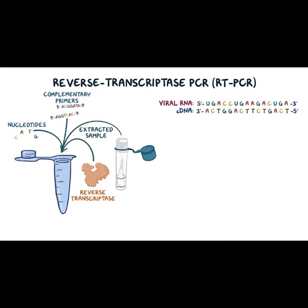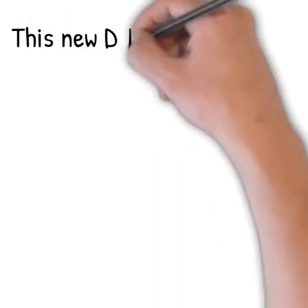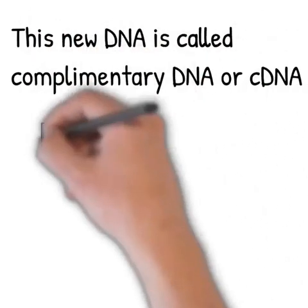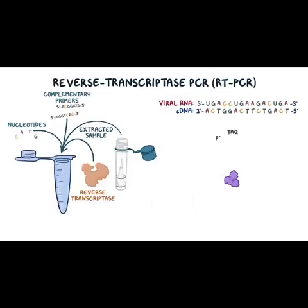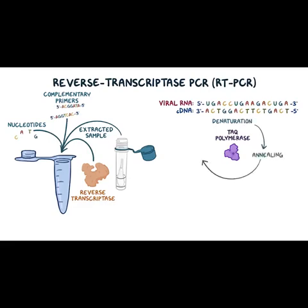In the first step, the RNA is reverse transcribed into DNA. We call it the complementary DNA, or cDNA, and we use an enzyme called reverse transcriptase. After the cDNA is made, using PCR, the cDNA is amplified by many thermal cycles. RT-PCR is one of the most sensitive techniques for RNA detection and quantification.